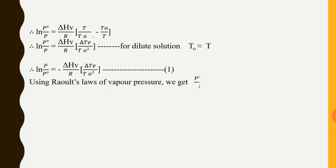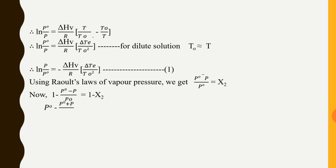Next, using Raoult's Law of vapor pressure, we get: (P0 − P)/P0 = X2. That is, the relative lowering of vapor pressure is directly proportional to the mole fraction of solute added, where X2 is the mole fraction of solute. Subtracting 1 from both sides: 1 − (P0 − P)/P0 = 1 − X2, which simplifies to P/P0 = 1 − X2.